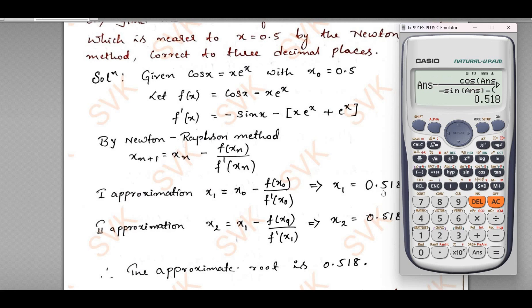Press equal to, it will get the answer as x₁ equal to 0.518. If you press equal to again, you are going to get the same answer. Therefore, x₂ value is also 0.518 and x₁ is also 0.518.